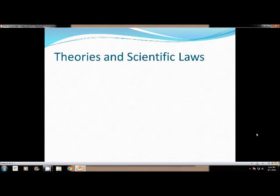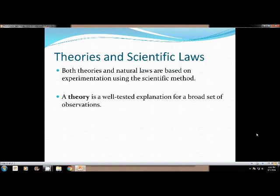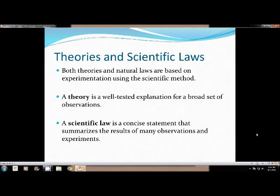After you have tested your hypotheses, then you can develop theories and scientific laws. Both theories and natural laws are based on experimentation using our scientific method. A theory is a well-tested explanation for a broad set of observations, whereas a scientific law is a concise statement that summarizes the results of many observations and experiments. A theory can be proven wrong. A theory is not set in stone. We have common theories like gravity and evolution. If other evidence comes up, they can be proven wrong. A scientific law is a statement that is set in stone. It's been tested. There's been nothing to go against it. We know it to be true for a fact.